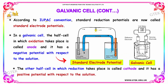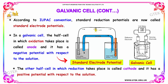According to IUPAC convention, standard reduction potentials are now called standard electrode potentials. In a galvanic cell, the half cell in which oxidation takes place is called the anode, and it has a negative potential with respect to the solution. The other half cell, in which reduction takes place, is called the cathode, and it has a positive potential with respect to the solution.